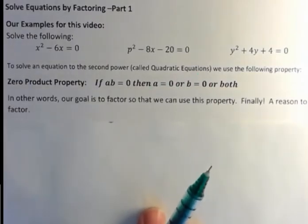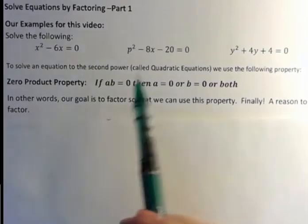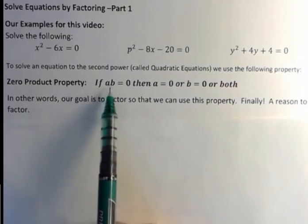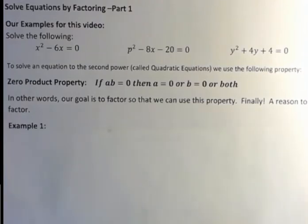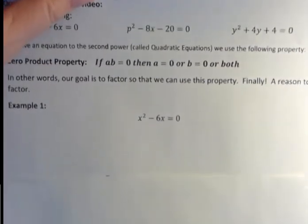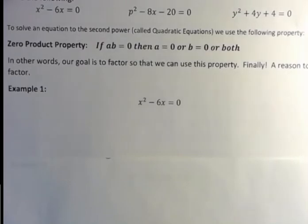So in other words, our goal is to factor so that we can use this property, because if we factor things into a multiplication problem, then we can use it. So finally, a reason to factor. Alright, example one. So we did a review of factoring recently, so that when you got to this point, you could remember all the different ways that you can factor.